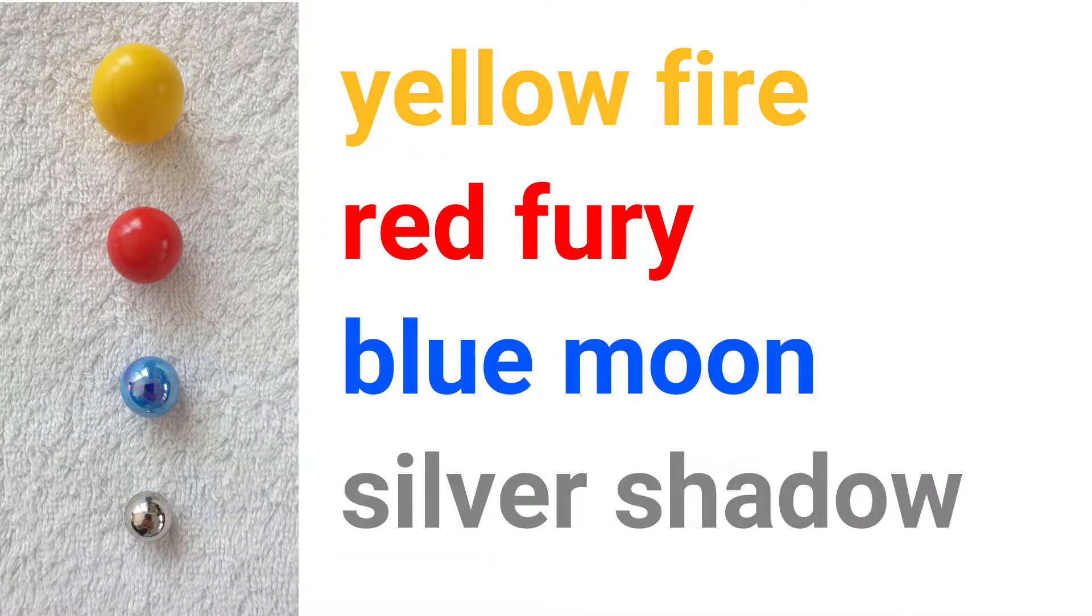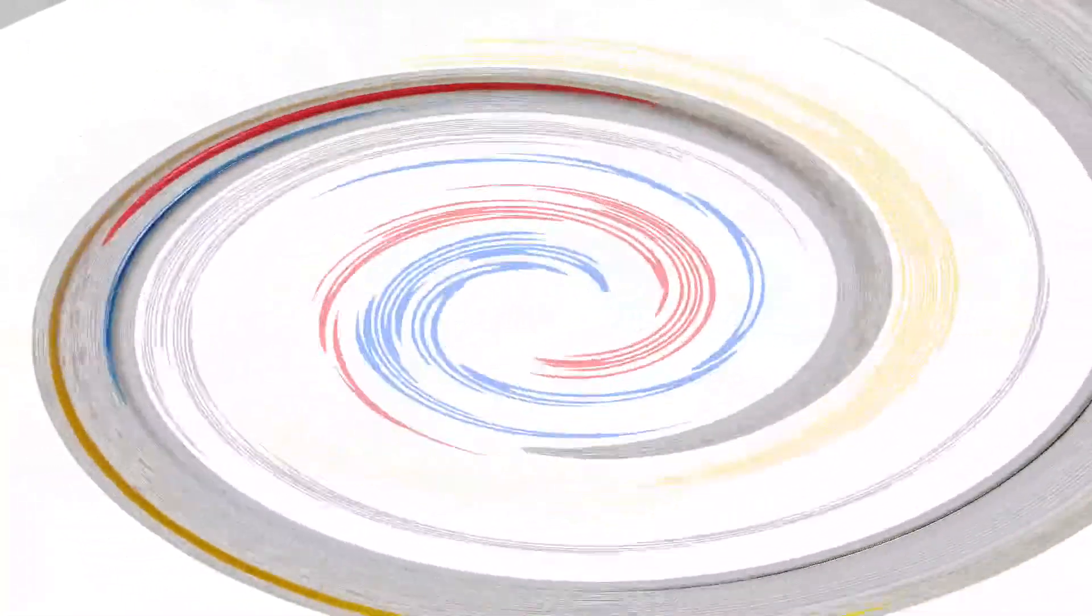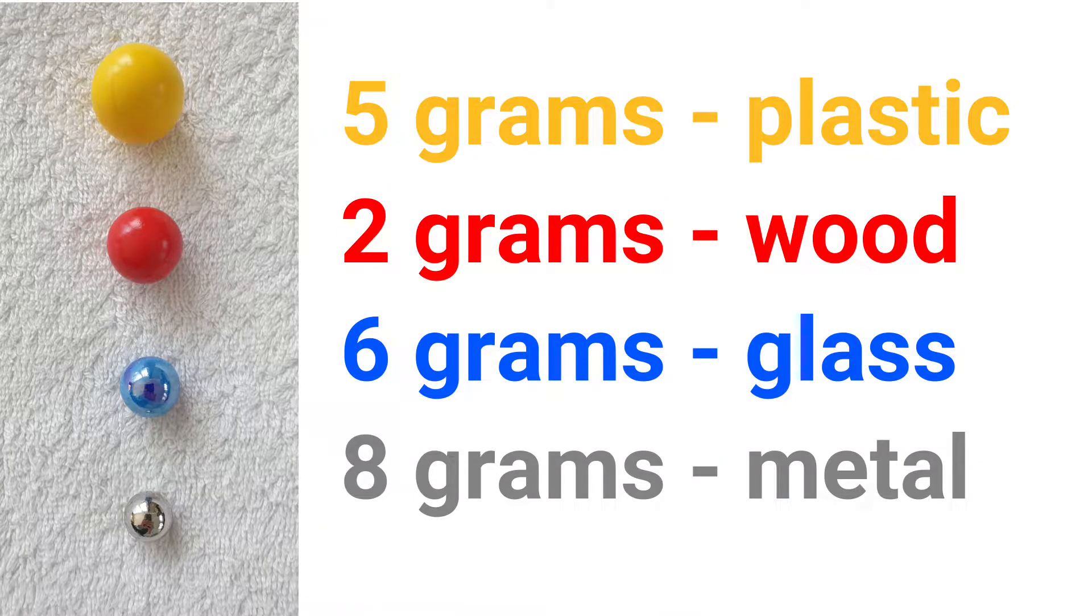We have Yellow Fire, Red Fury, Blue Moon, and Silver Shadow. They are made of plastic, wood, glass, and metal. Let's race!